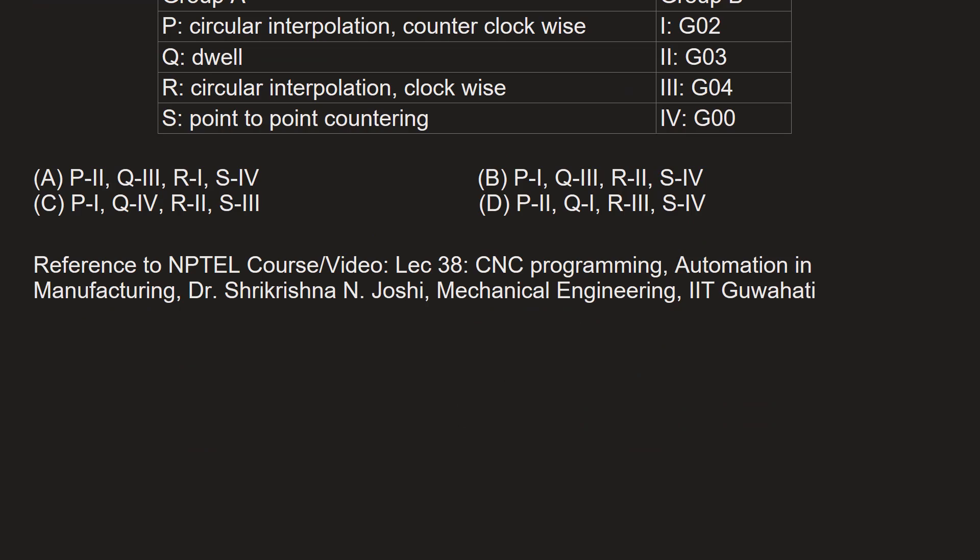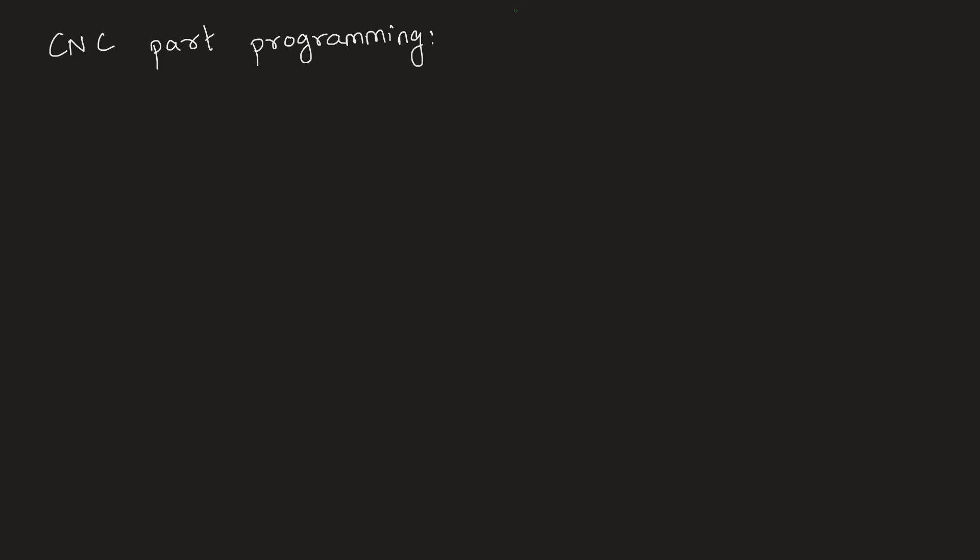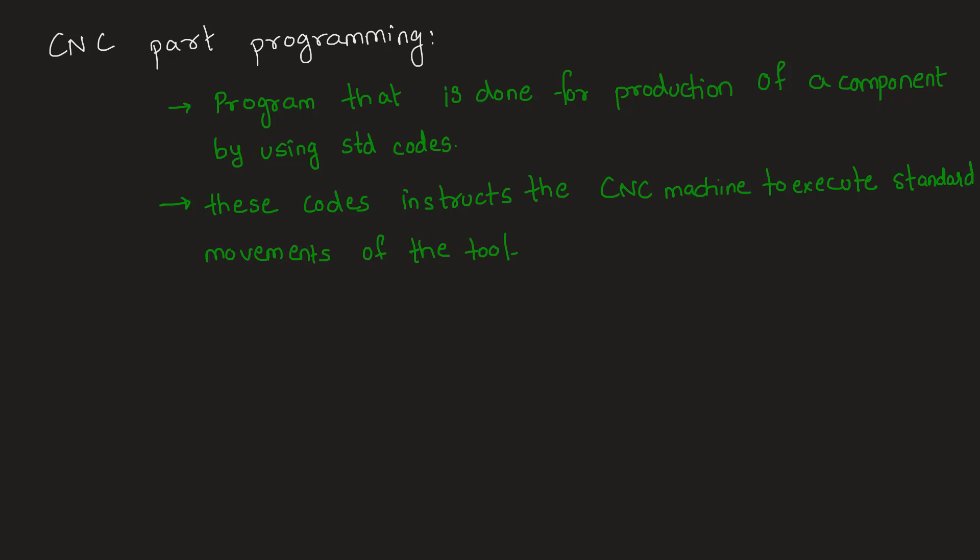CNC part programming refers to a program that is done for production of a component by using standard codes. These standard codes instruct the CNC machine to execute standard movements of the tool.